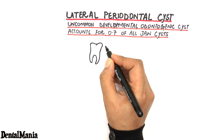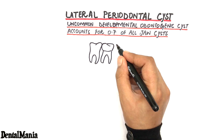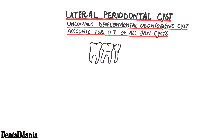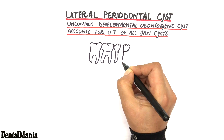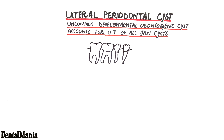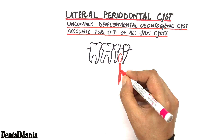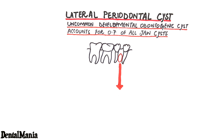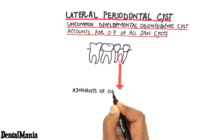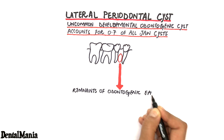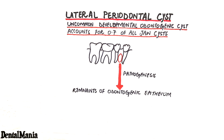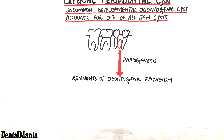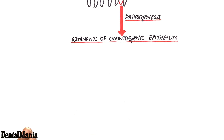As the name implies, the lateral periodontal cyst develops along the lateral root surface of a vital and erupted tooth. The cyst is thought to arise from remnants of odontogenic epithelium, which is the epithelium that aids in tooth formation, and its remnants are the cells left behind.